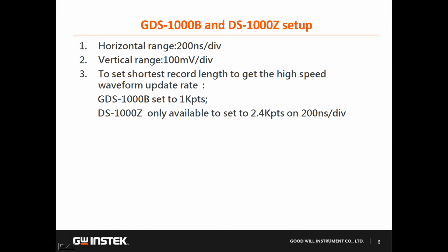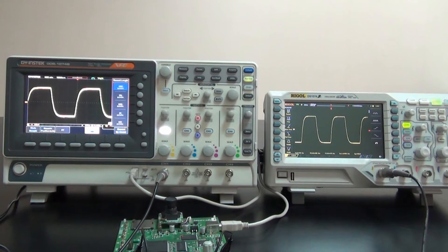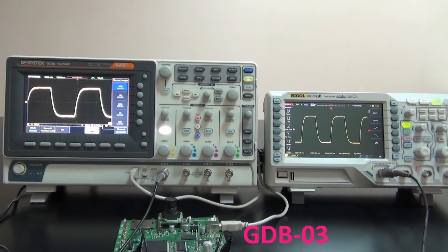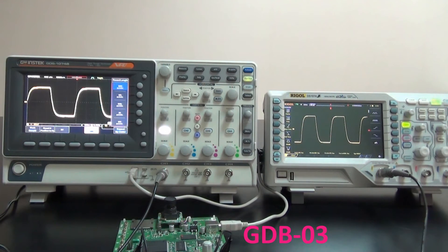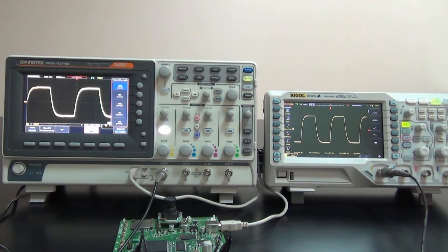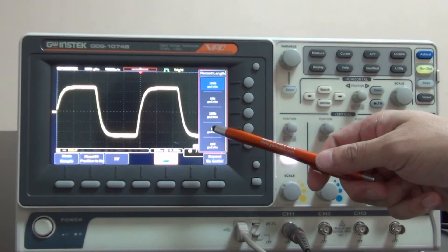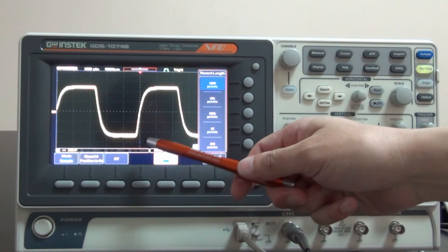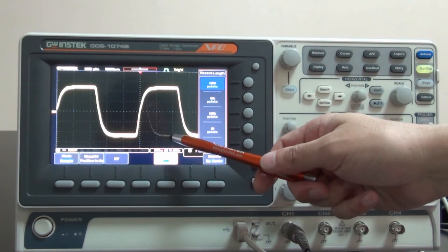Both oscilloscopes have the same setup parameters. First, we will compare burst waveform capture between GDS-1074B and DS-1074Z. Let's observe waveforms of GDS-1000B. You can see there are stable signals and a burst signal.